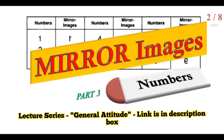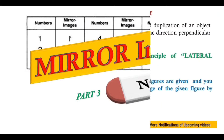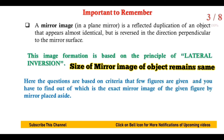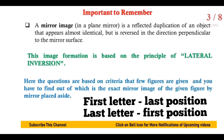First we have to remember that mirror image formation is based on the principle of lateral inversion. A mirror image in a plane mirror is a reflected duplication of an object that appears almost identical — meaning the size of the object will not change, but it is reversed in the direction perpendicular to the mirror surface.